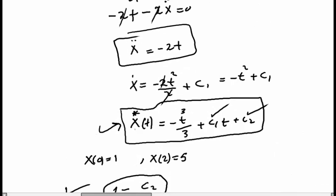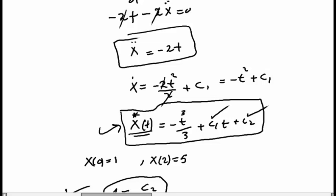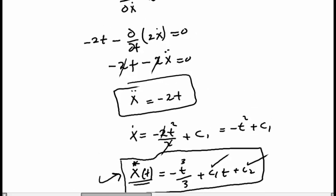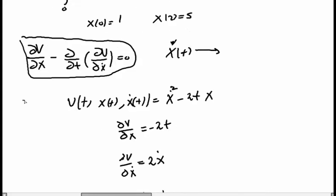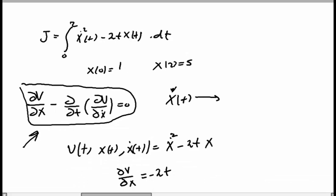We got x*(t), the solution for our optimal control problem. I hope this video was helpful in showing you how to use the Euler-Lagrange method to solve an optimal control problem. In this problem we don't have a plant — we just need to minimize the cost function and find x(t) that makes this objective optimal. Thank you for watching, see you next time.